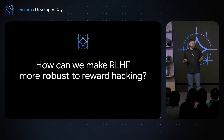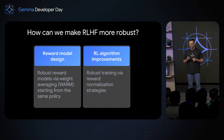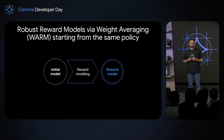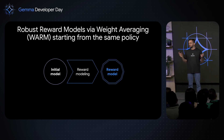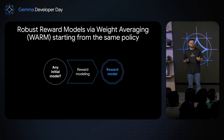So how can we make RLHF more robust to reward hacking? In this presentation I'll focus on two research principles we used to train Gemma 3. The first looks into reward model design: a robust reward model via weight averaging and warm-starting from the same policy. To obtain your reward model, you start from a policy — an instruction-tuned model or a pre-training model — transferring general language ability to the ability to judge whether a given answer and prompt is good. You might think bigger is better: a larger model with hundreds of parameters gives a less noisy reward signal. But our research showed that's not necessarily the case.